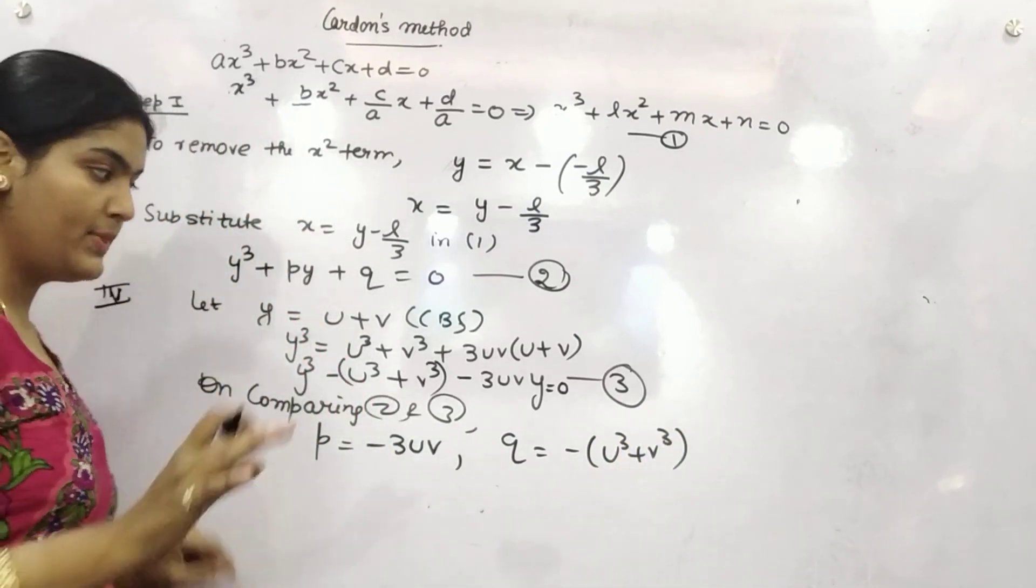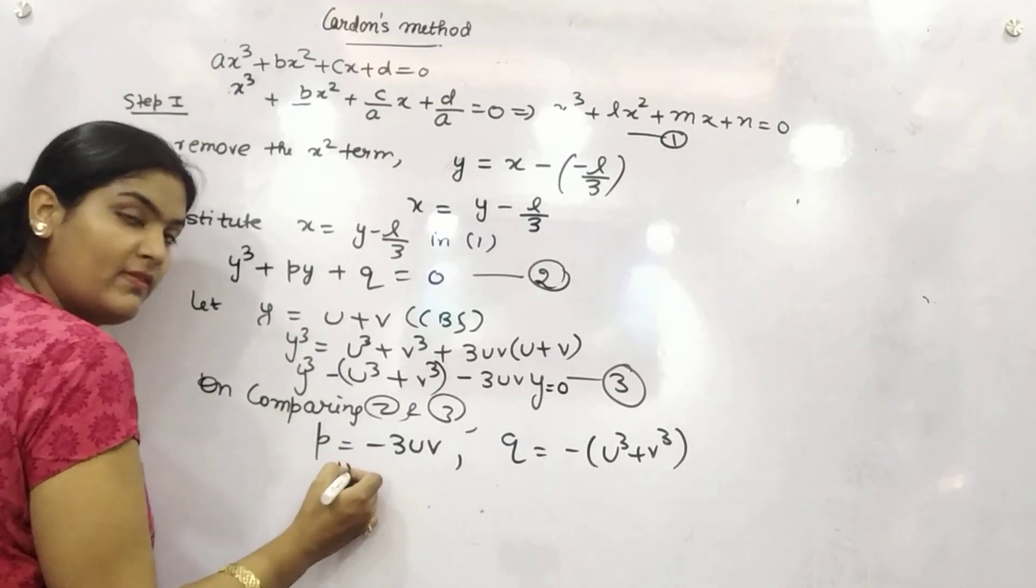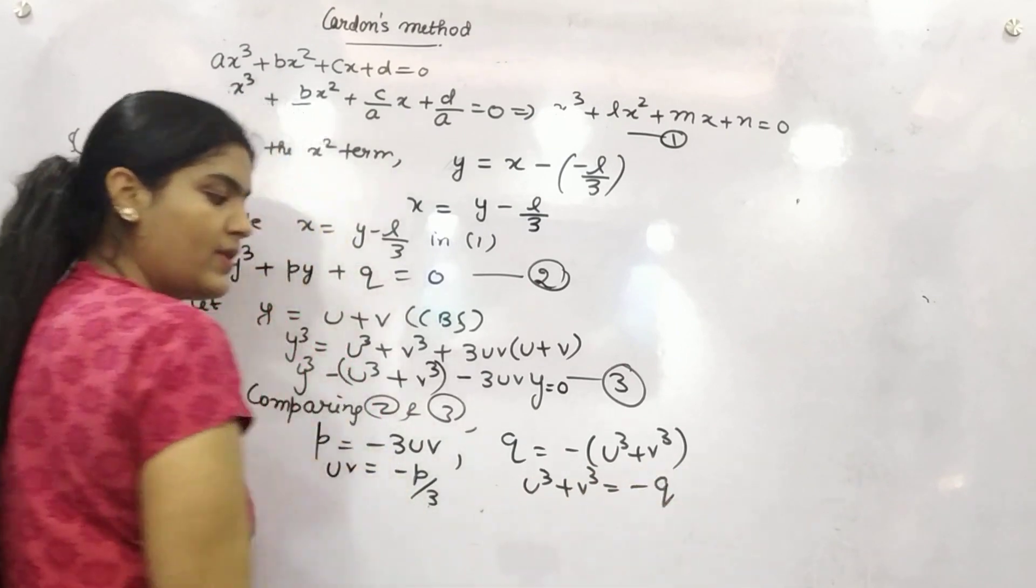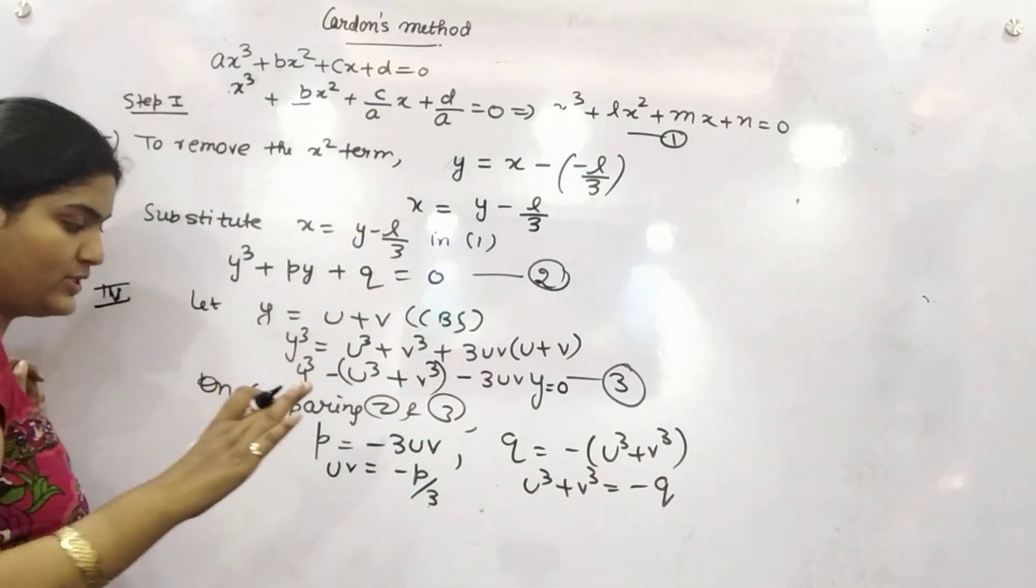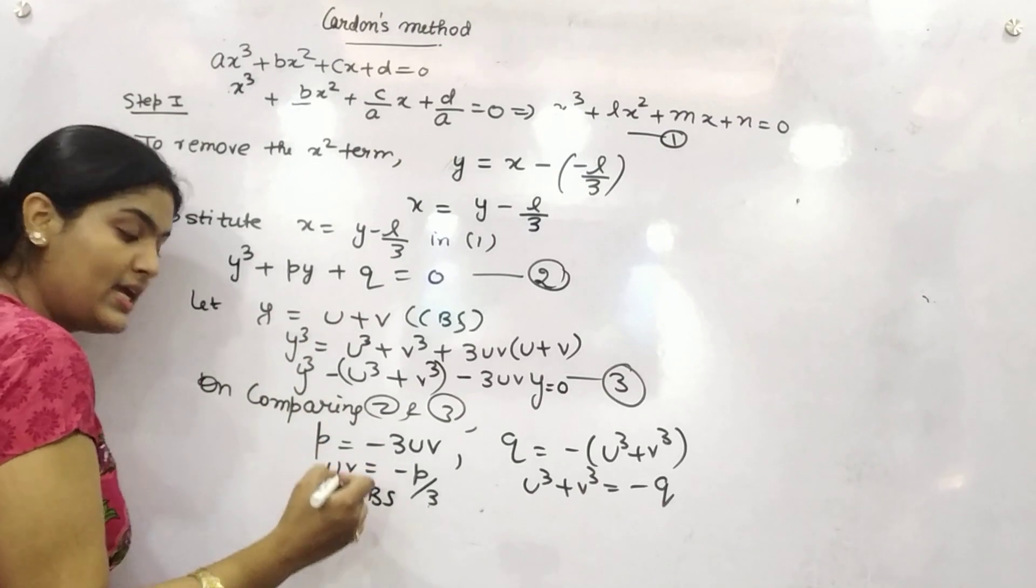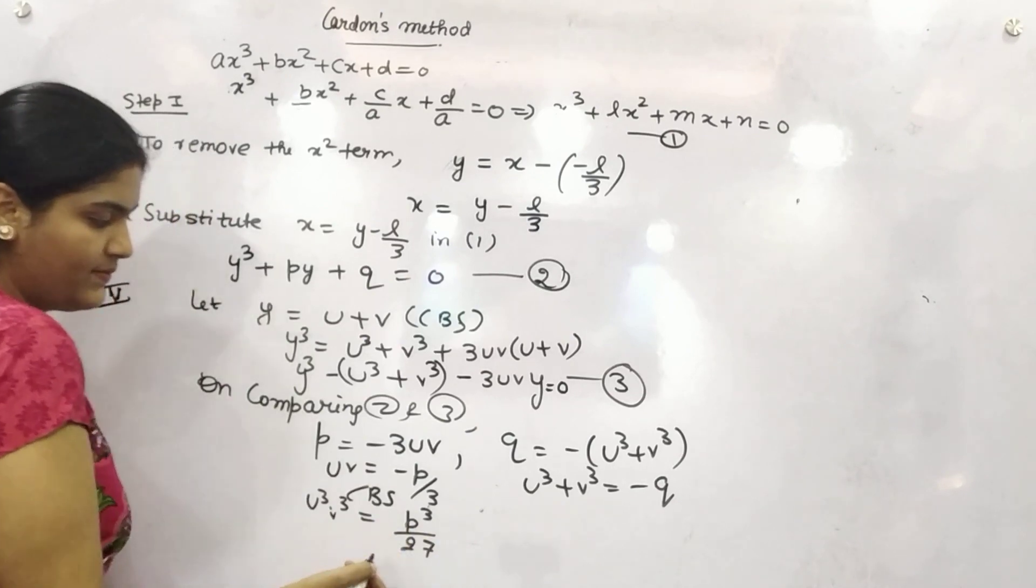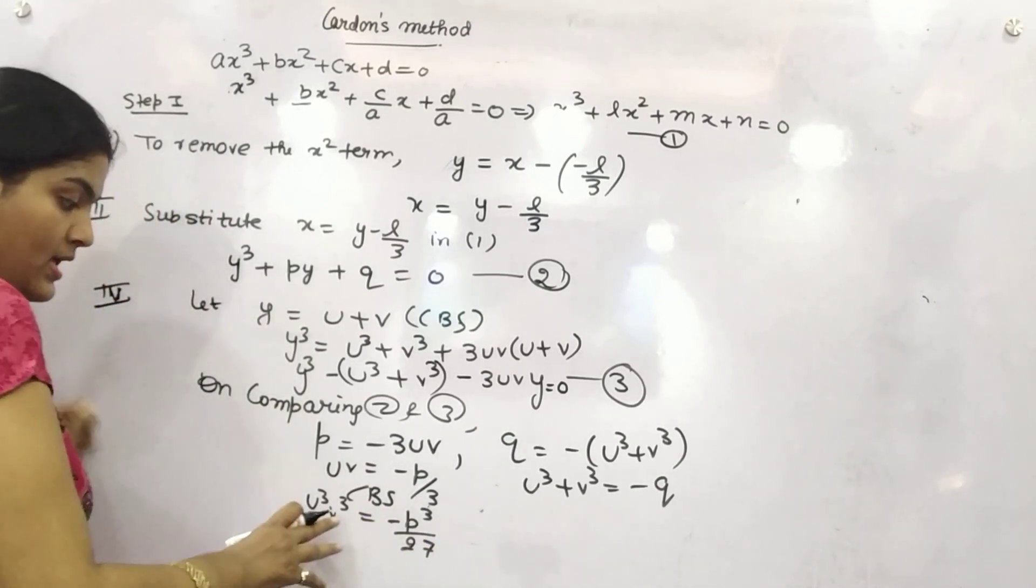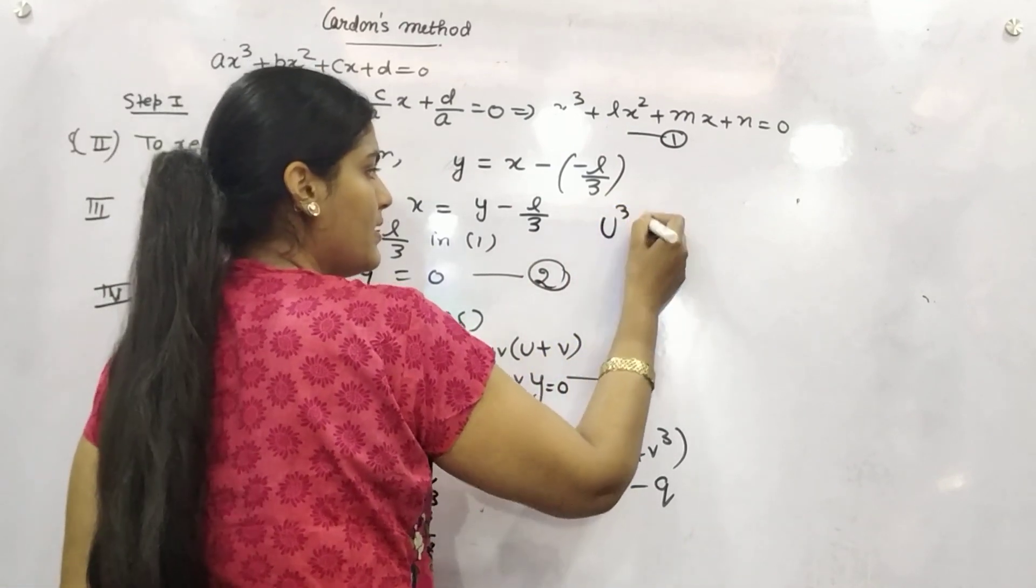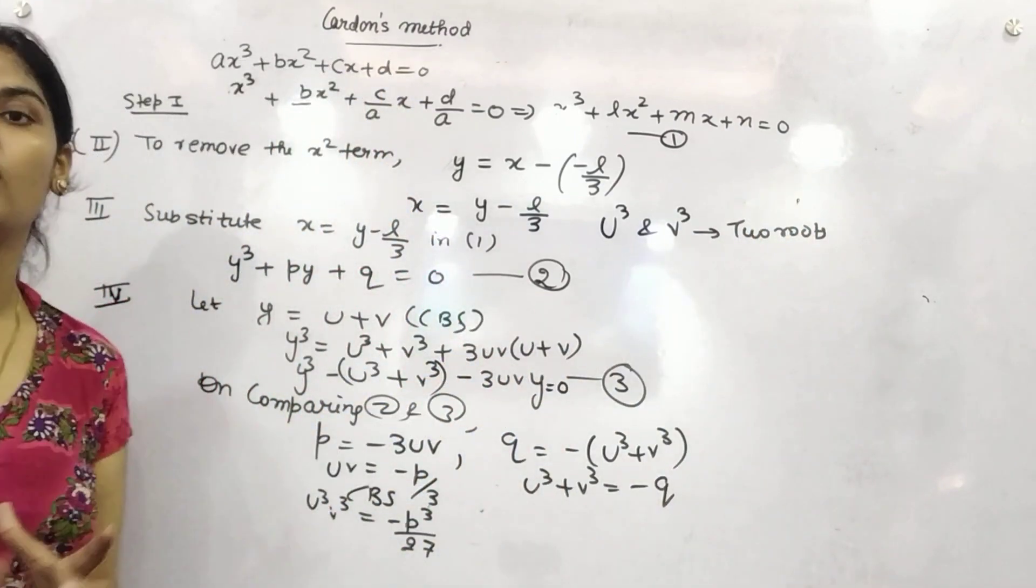Now, if you find out the value of uv, so uv will be minus p by 3 and here u cube plus v cube is minus q. Now, listen, what I am going to do. If you are cubing both sides, then you will get the form of u cube, v cube, p cube by 27.